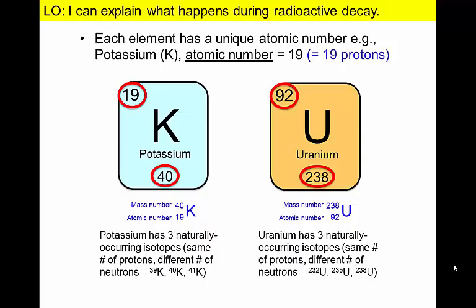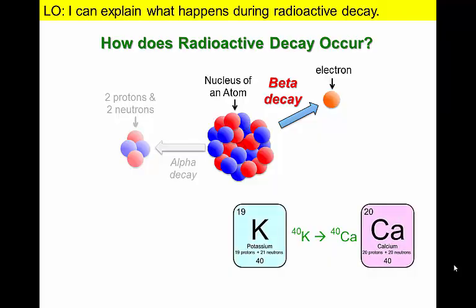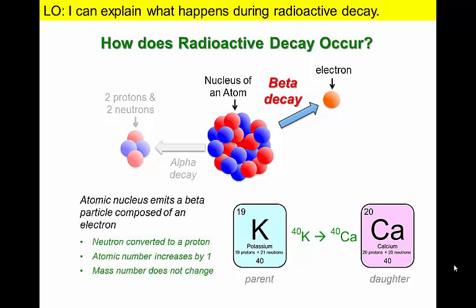Radioactive decay occurs when an isotope loses or gains protons and/or neutrons to convert to a different isotope or element. For example, potassium-40 can lose an electron through a process known as beta decay. This changes a neutron to a proton, converting potassium to calcium. The potassium is termed the parent isotope, and the calcium is known as the daughter isotope or atom.